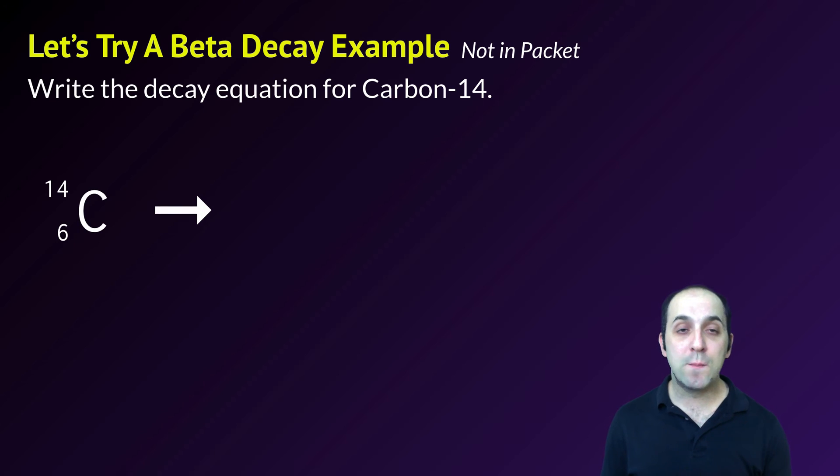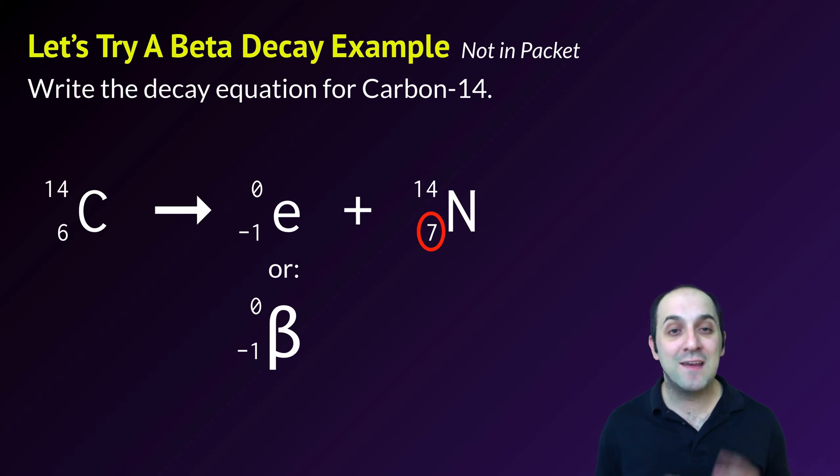Carbon-14 is going to produce a beta particle. I can go with either version off reference table O, both are acceptable. Now it's just a matter of subtraction. 14 minus 0 is 14, and 6 minus a negative 1 is 7. Please be careful - 6 minus a negative 1 actually increases our atomic number by 1. When we do beta decay, make sure the atomic number goes up by 1. It's a very common mistake.